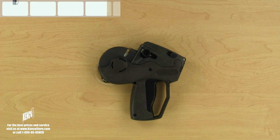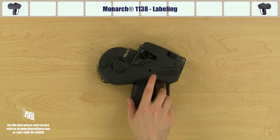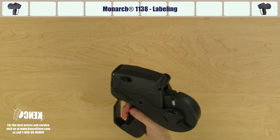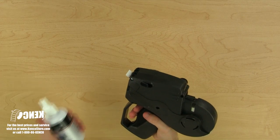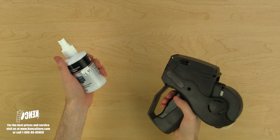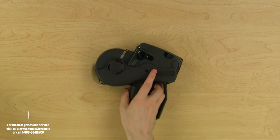Now that we've put in the new ink roller, we can begin labeling. To label an item, simply pick up the gun, squeeze and release the trigger once, hold the price gun directly over the product, then just roll the label on your product and you're all done.